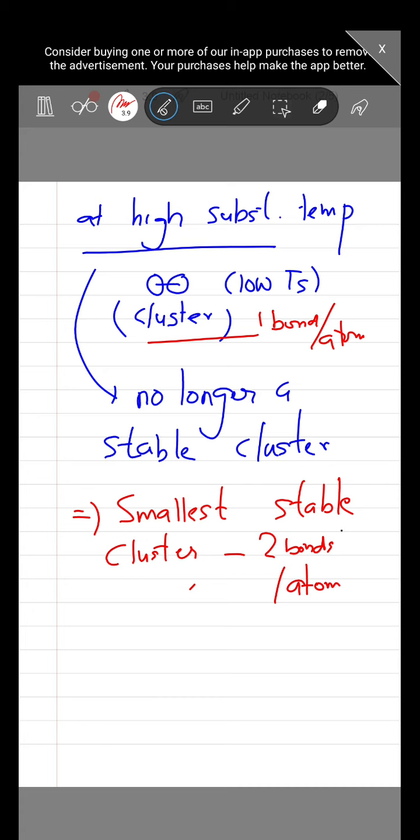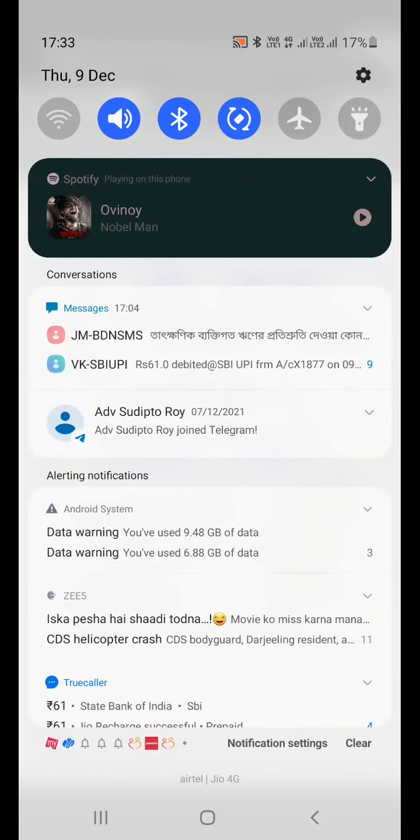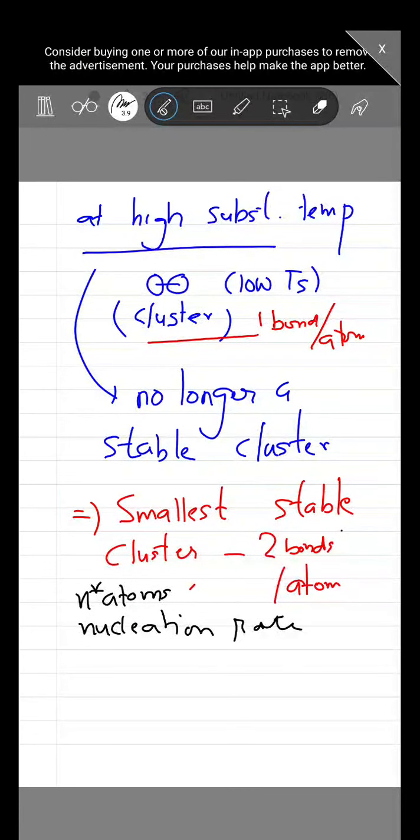The general expression of the nucleation rate of the critical nucleus is, if we have N* atoms for example, then the nucleation rate can be expressed as: So, this is the default expression.